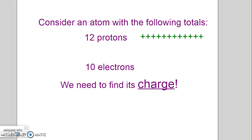So what do we do with those? Well, we just learned that protons are positive. So I'm going to put 12 positive charges, and electrons are negative, 10 negative charges. So, add them up.